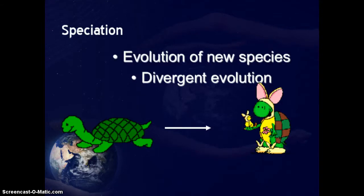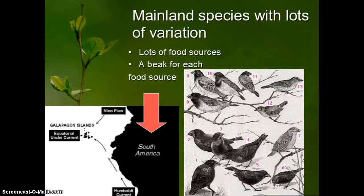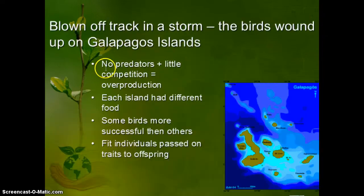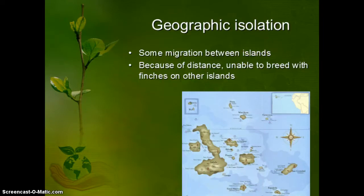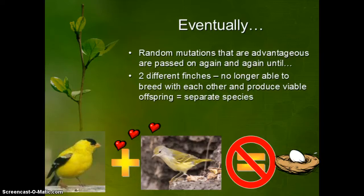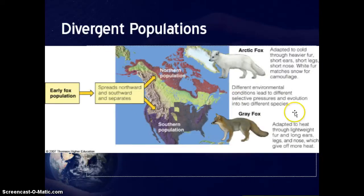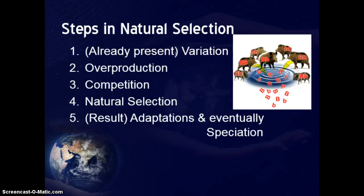Eventually, if enough adaptations and differences build up in a population, you can get a new species — that's called speciation. It happens through divergent evolution: things start to become very different or diverge, and eventually they're so different they can no longer reproduce with each other, giving you a new species. Darwin saw this with his finches — different beaks for different food sources on different islands. Because they were geographically isolated, they became two different species that could no longer breed with each other. That is our definition of a separate species. If this happens long enough in any population, you can get entirely new species.